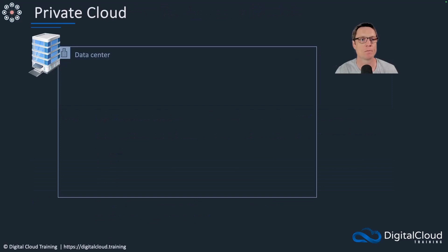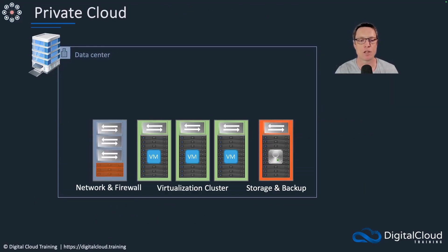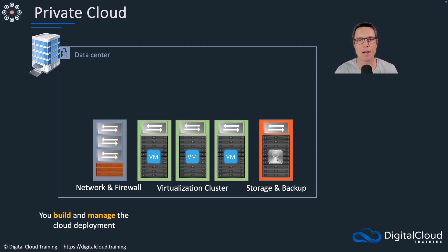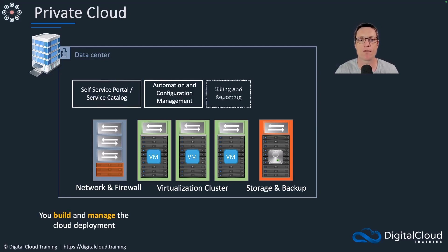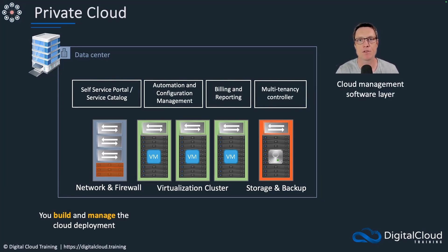Let's have a look visually. Private cloud is where we've built our infrastructure layer — we've got our virtualization clusters, storage and backup systems, networking and communication devices, and potentially some firewalls as well. So we're going to build and manage this cloud deployment in our data center, and then we need to layer on top some capabilities through software: a service catalog and self-service portal, configuration management, billing and reporting, and multi-tenancy, among other components.